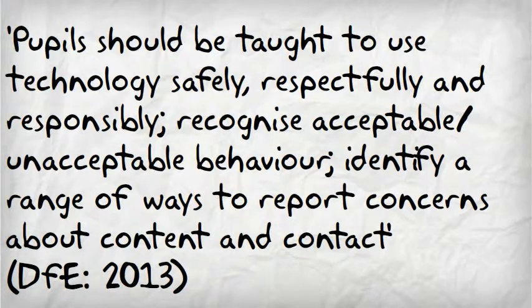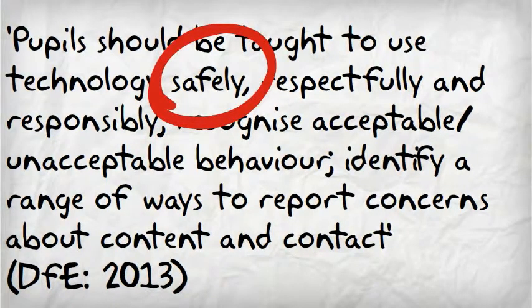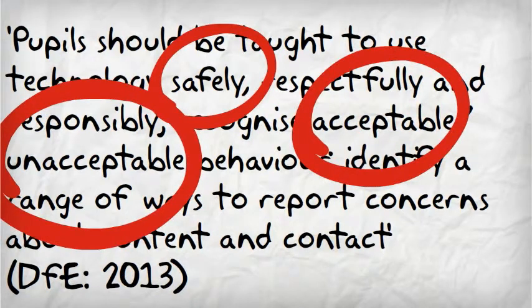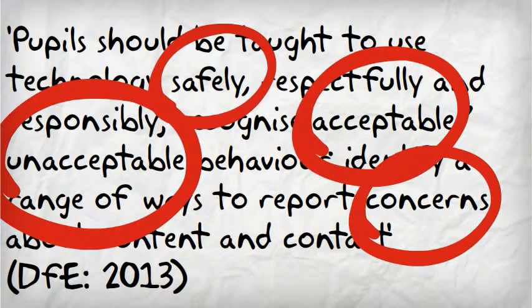In relation to the National Curriculum for 2014, children should be taught technological safety, learning what is acceptable and unacceptable behavior online and how to report concerns. This will contribute to prevention of internet risks at school and at home.